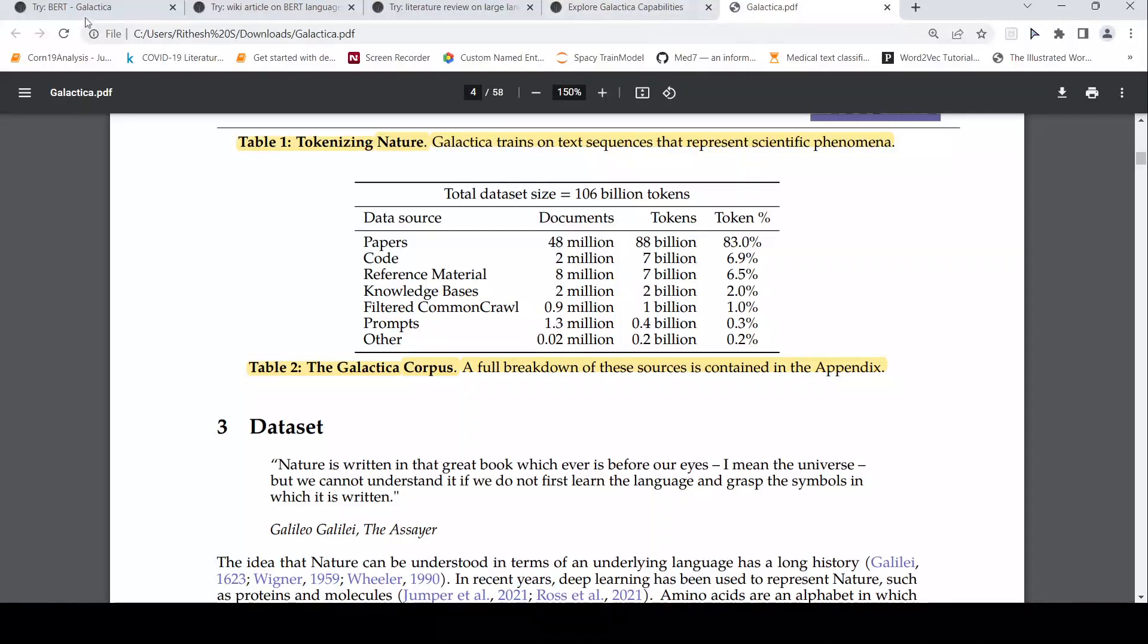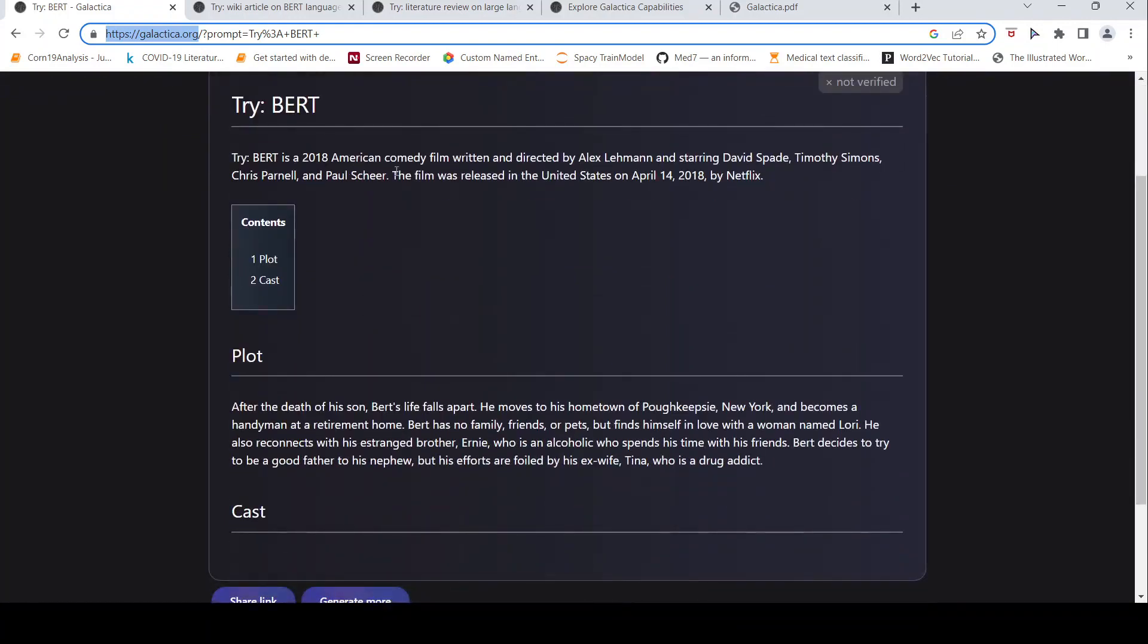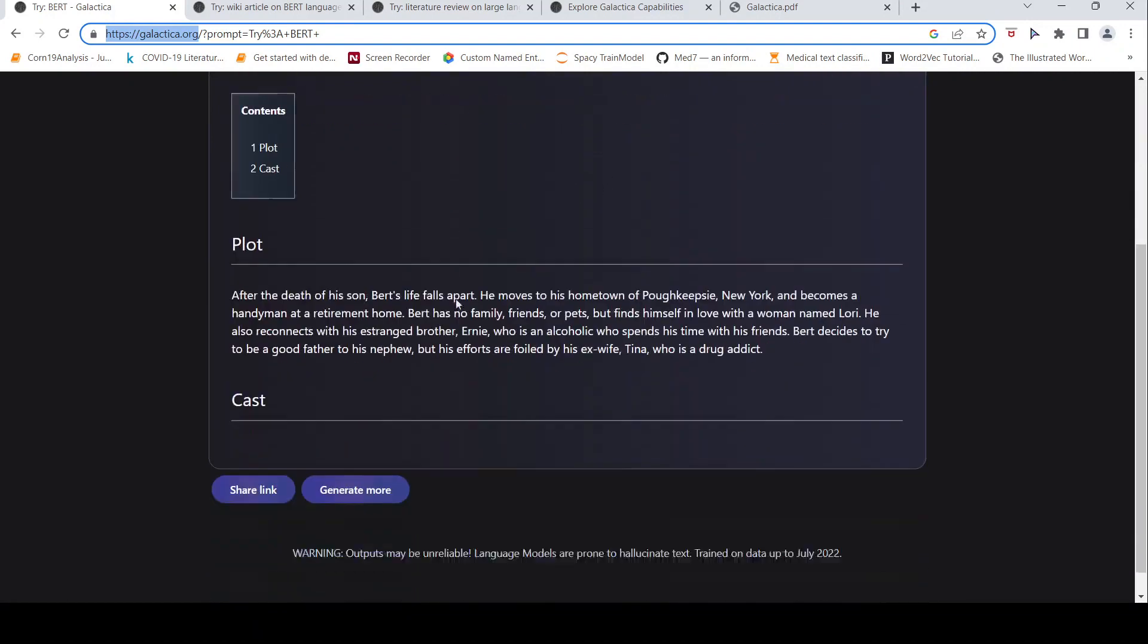They also have a demo site where you can try out things to see what is generated from this model. For example, here it says generated document for query. So this is the query you put tri-colon and I just put BERT. My mind was saying it is large language model, but I just put BERT. So then it gives that BERT is actually a comedy film. And there is some plot of it, some details it gives about this and it was released by Netflix.